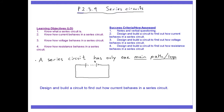A series circuit has only one main path or loop. The wires come out of one side of the battery and go into the other side. If there's more than one loop, then it's not a series circuit — it's parallel, and I'll talk about that in another video.